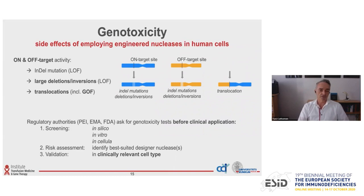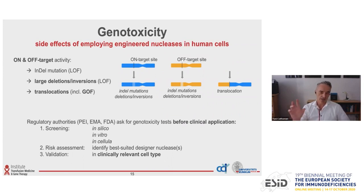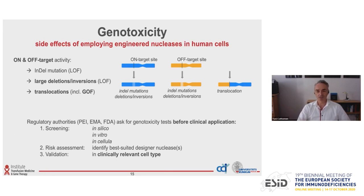The regulatory authorities ask for genotoxicity tests before clinical application. Most people apply screening assays — either computer-based prediction tools, in vitro assays, or cell-based assays — to assess the specificity of their lead candidates. Then they validate the on-target activity as well as off-target activity in the clinically relevant cell type, T cells or hematopoietic stem cells. This allows them to identify the best designer nuclease to go to the clinic.